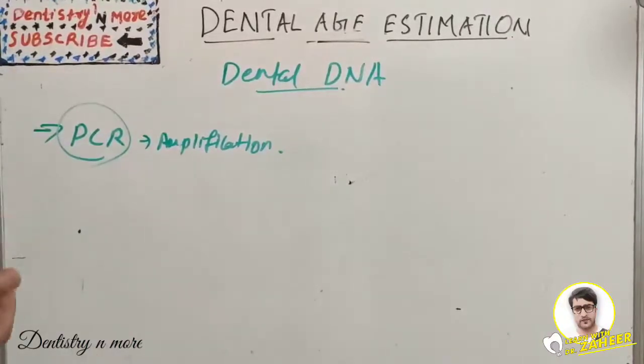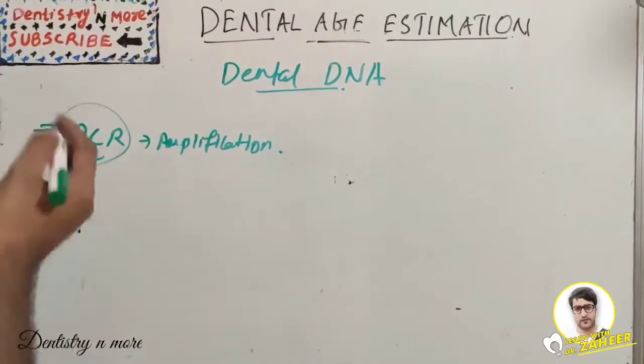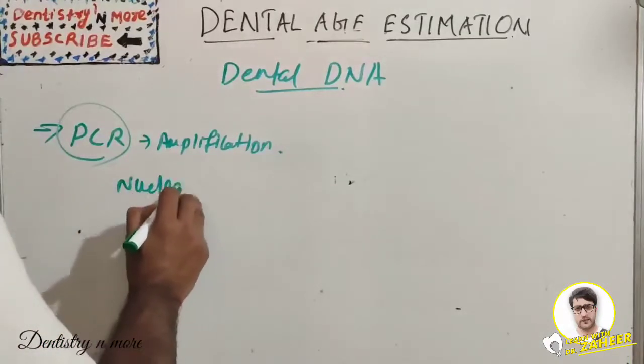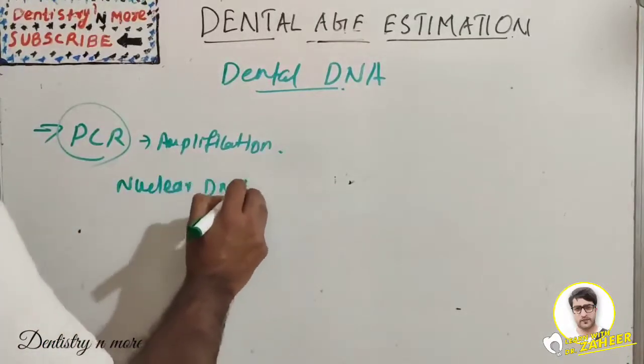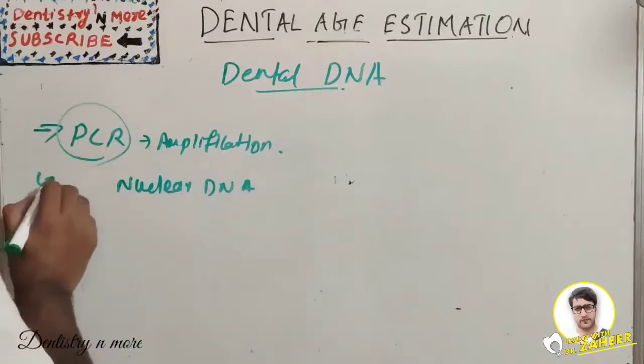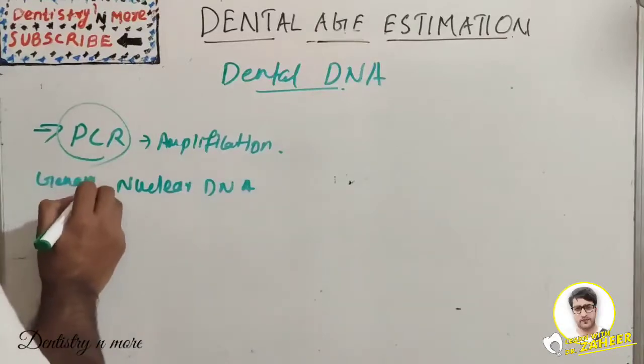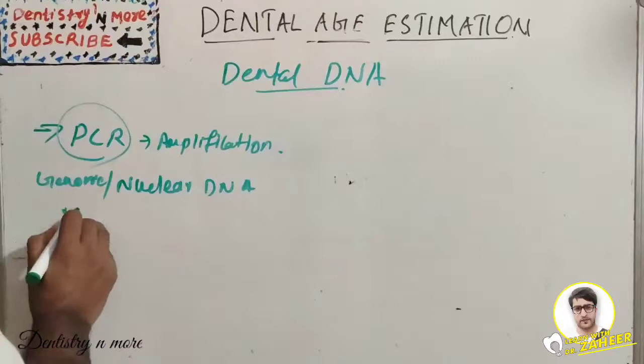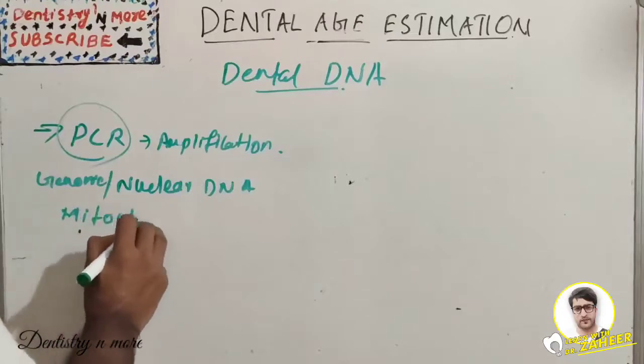We have two types of DNA. First is nuclear DNA, that is genomic DNA located in the nucleus of a cell and commonly used in forensic studies. The second is mitochondrial DNA, which is present in the mitochondria of cells.